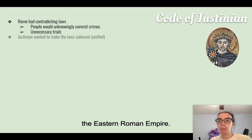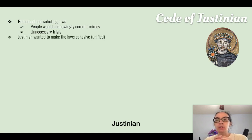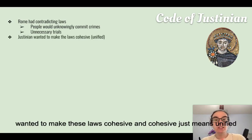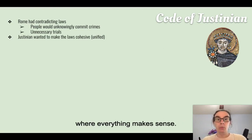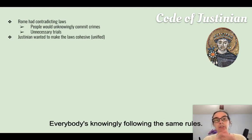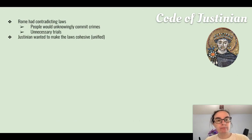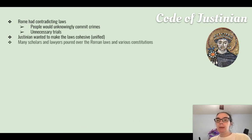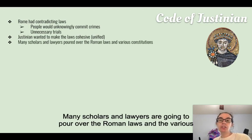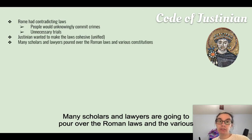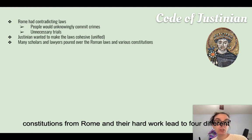Justinian wanted to make these laws cohesive — cohesive just means unified, where everything makes sense and everybody is knowingly following the same rules. Many scholars and lawyers poured over the Roman laws and the various constitutions from Rome.